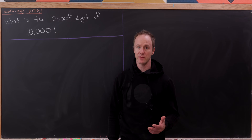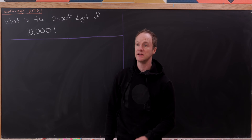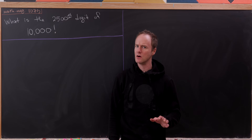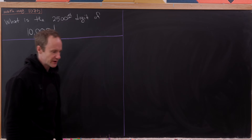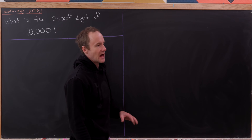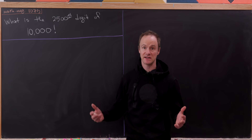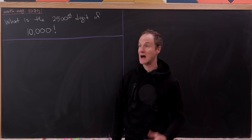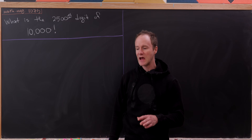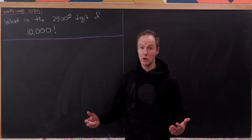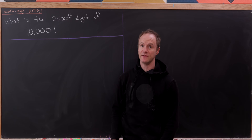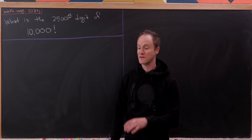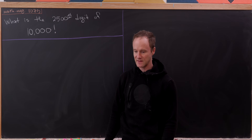The first thing we're going to do is determine how many trailing zeros there are in 10,000 factorial, and hopefully that number will be somewhat close to 2,500. We can determine how many times 10 divides into 10,000 factorial, but observe that that's going to be the same thing as the number of times 5 divides into 10,000 factorial.